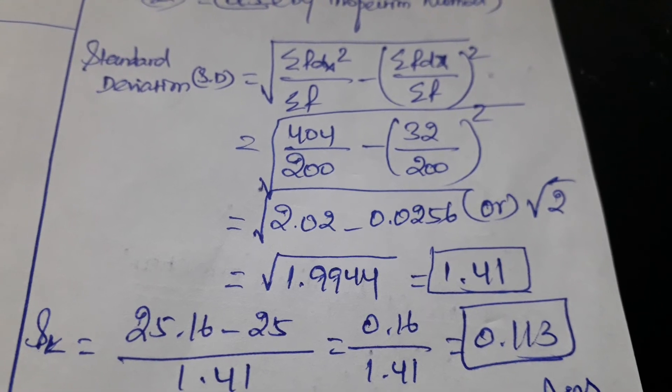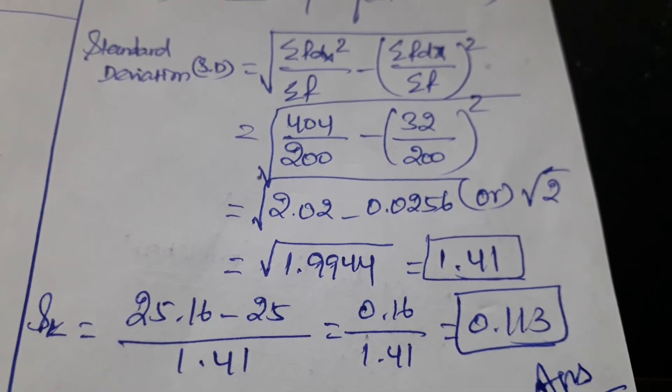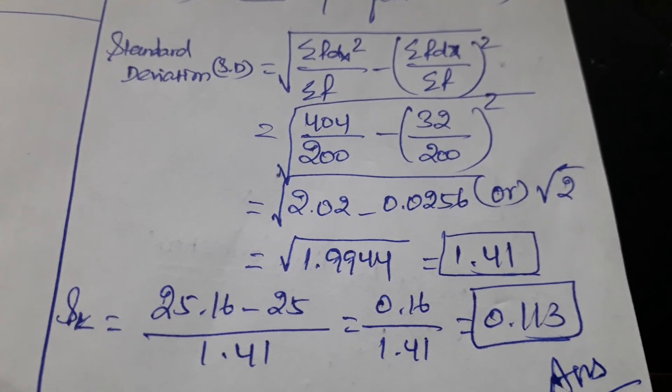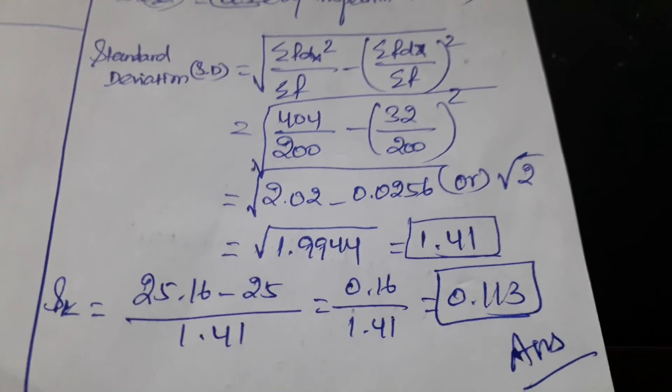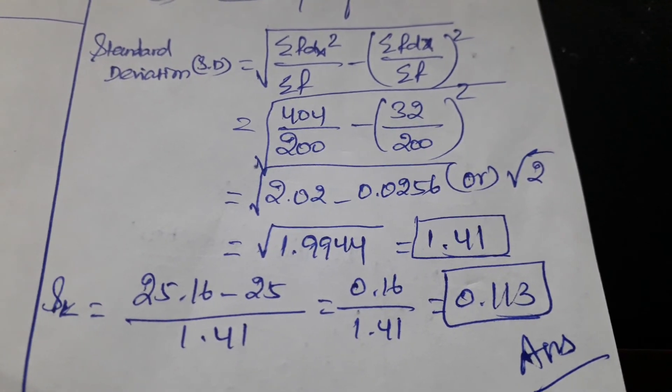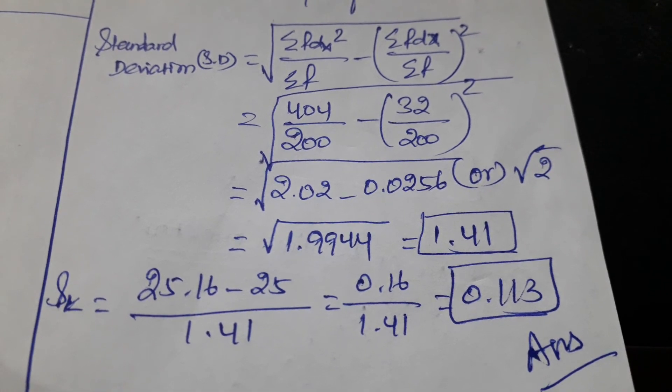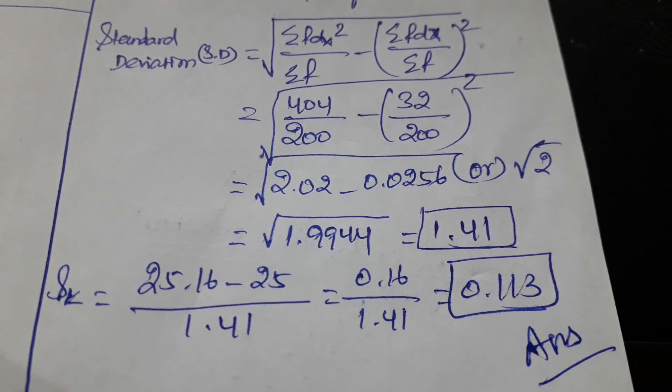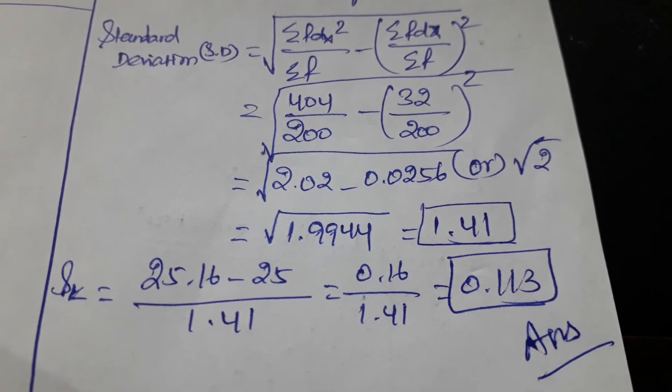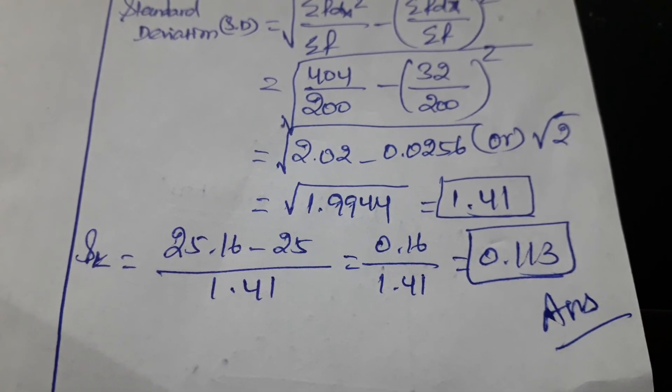We have already calculated these values, so we will directly apply them in this formula. Finally we can get the value as square root of 2. If we then take the square root of 2, we can get 1.41. It is our standard deviation.